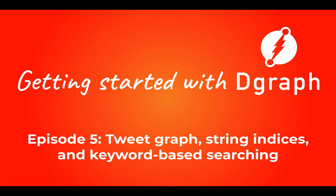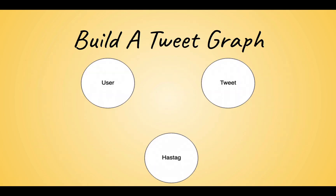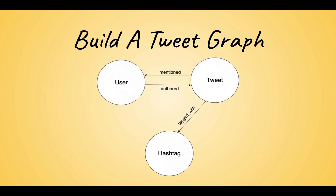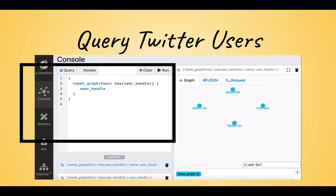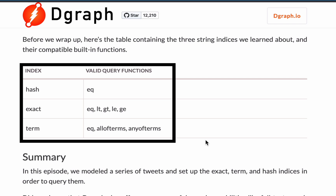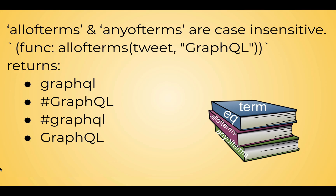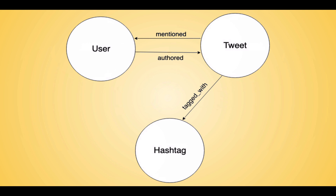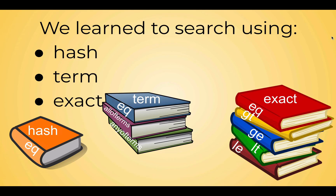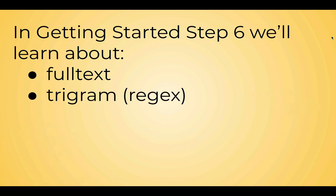Thank you for sticking around to the end and allowing me to share what I've learned about DGraph and GraphQL+-. Before we wrap up, let's have a recap. Here's a table containing the three string indices we learned about and their compatible built-in functions. Remember, allofterms and anyofterms are insensitive to case and special characters. In this episode we modeled a series of tweets and set up the exact, term, and hash indices in order to query them.